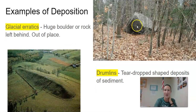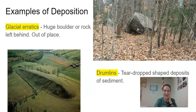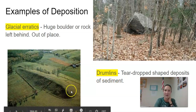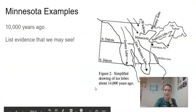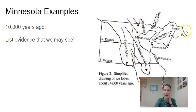Another one is called a glacial erratic — this is like a huge boulder or rock that's normally left behind and out of place. This is what you'll see in the school forest, if you've been up at our school forest at the middle school. And then a drumlin — kind of a neat one, best seen from an airplane. It's kind of like a tear-shaped droplet of sediment. As the glacier retreats, it drops off a bunch of sediment and builds up that tear-shaped droplet. In Minnesota we see examples of this a lot, and we also see a lot of agates left behind by the Lake Superior lobe, which is why you see them along the north shore.